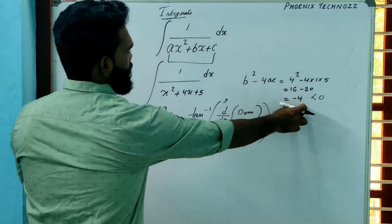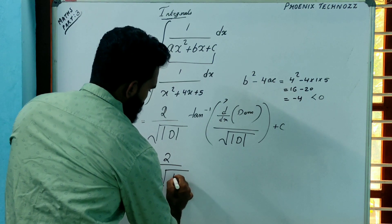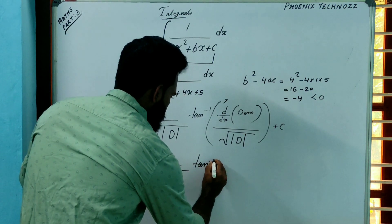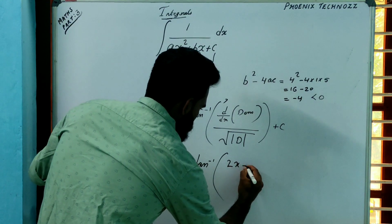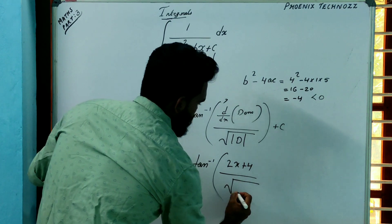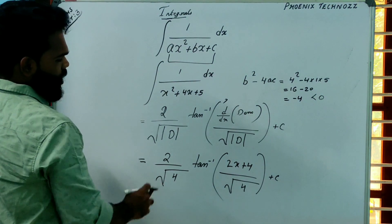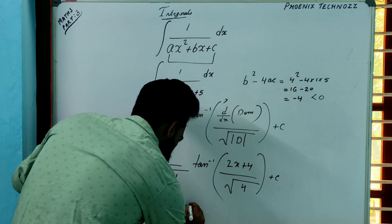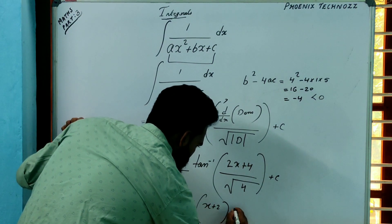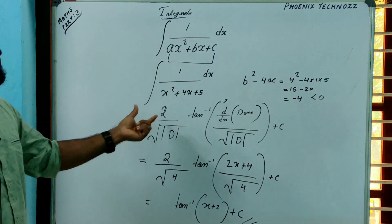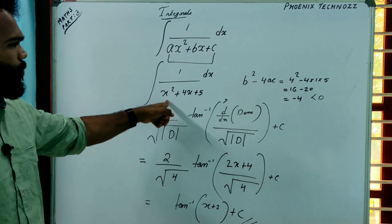Here the discriminant is −4, so the answer is 2 divided by √|−4| = √4, into tan inverse of the derivative of the denominator. The denominator is x²+4x+5 and its derivative is 2x+4, divided by √4. Simplifying: 2/2 = 1, so the answer is tan inverse of (2x+4)/2, which equals tan inverse of (x+2) + C. That is the final answer for ∫1/(x²+4x+5) dx.